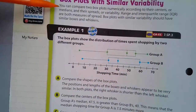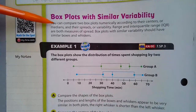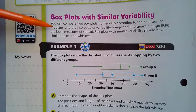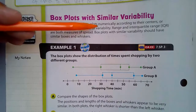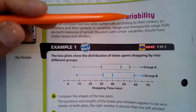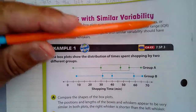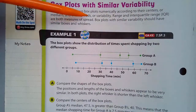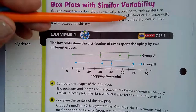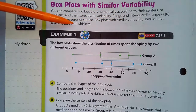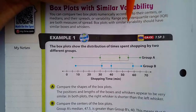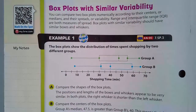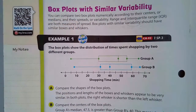Box plots with similar variability: you can compare two box plots numerically according to their centers, or medians, and their spreads, or variability. Range and interquartile range (IQR) are both measures of spread. Box plots with similar variability should have similar boxes and whiskers — that's what you're looking for when assessing variability.